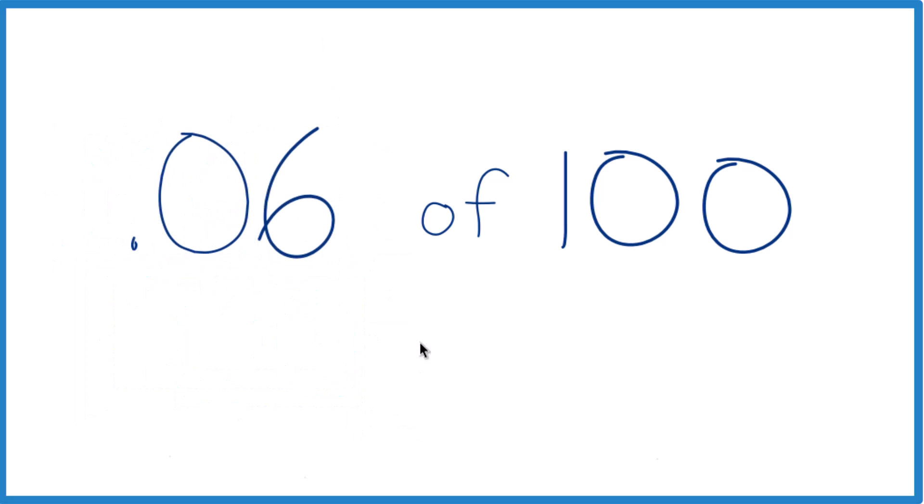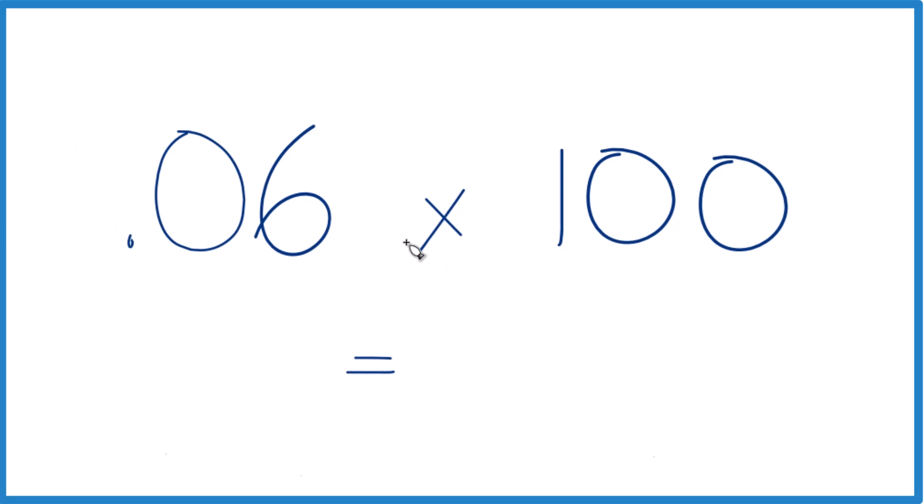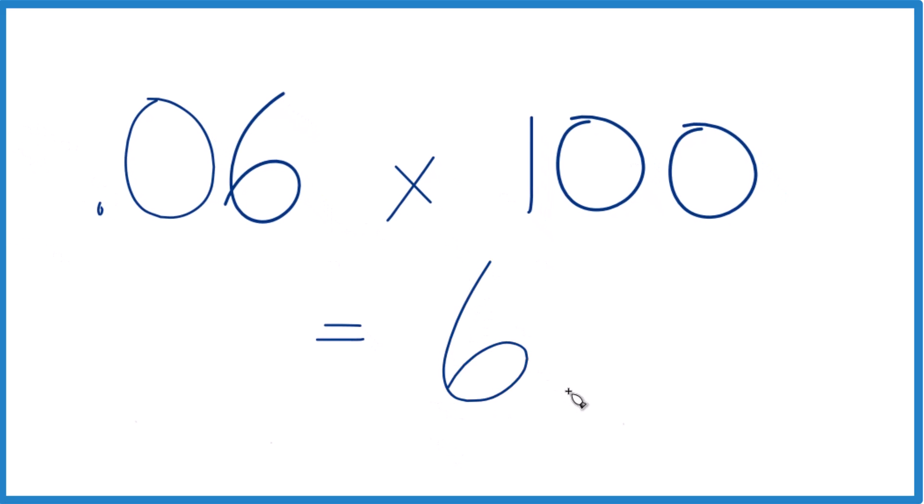So we take 0.06, instead of 'of' we're going to say times 100. Remember we got our decimal, we multiply that by 100, and 0.06 times 100 equals 6.